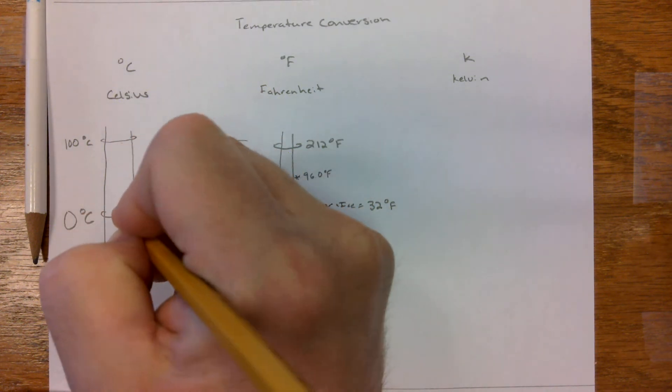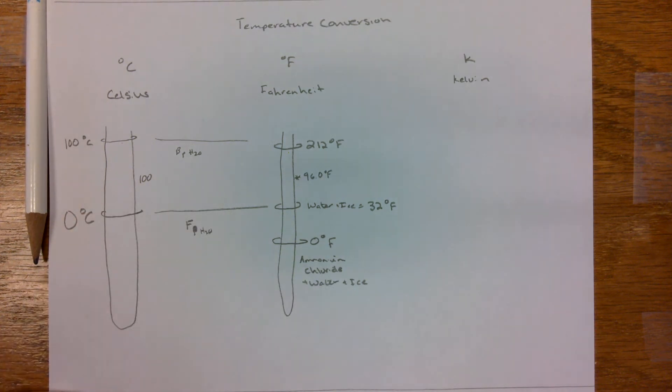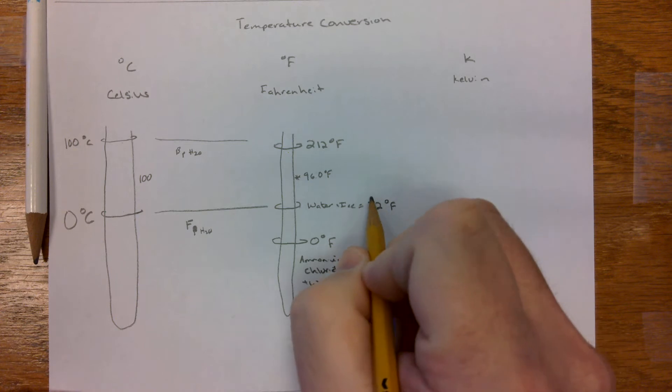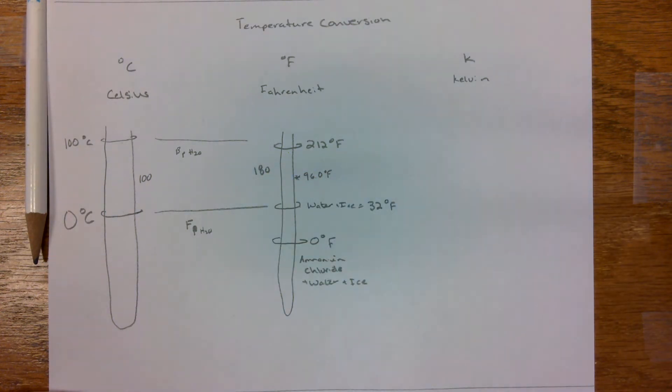Between here and here, there are 100 hash marks, so a scale of 100. Between here and here, 32 from 212 is 180 points. It's not a good round number. It's not easy to work with, but hang in there.